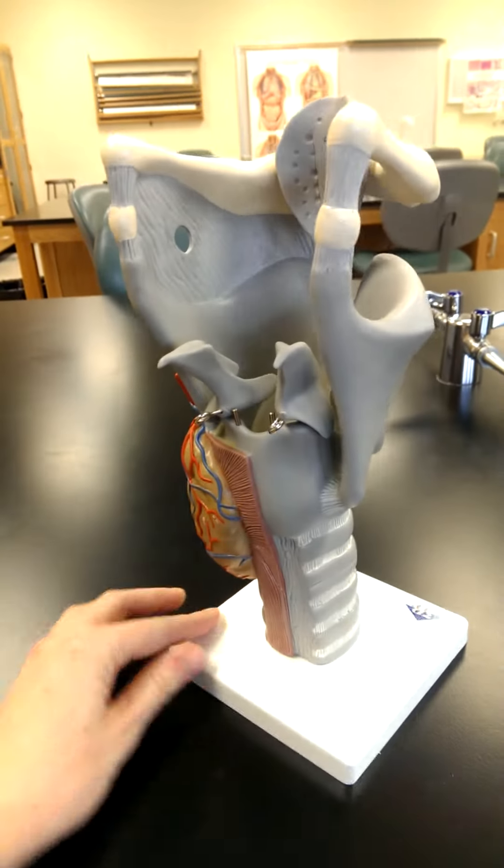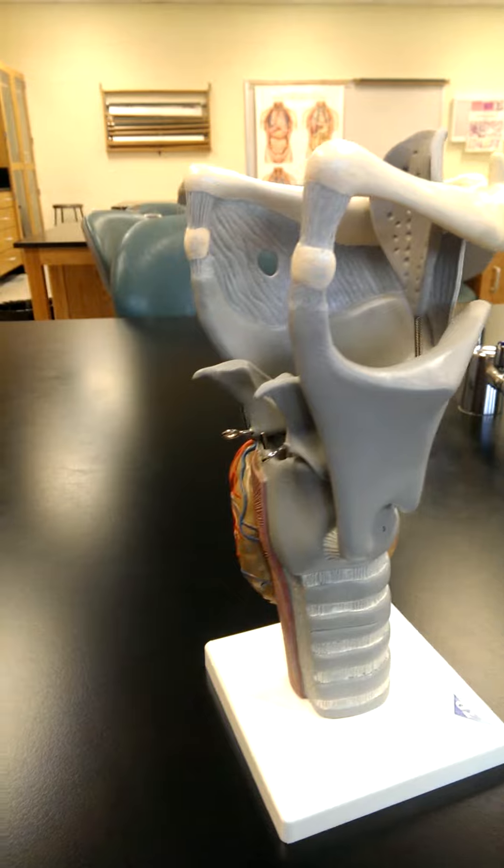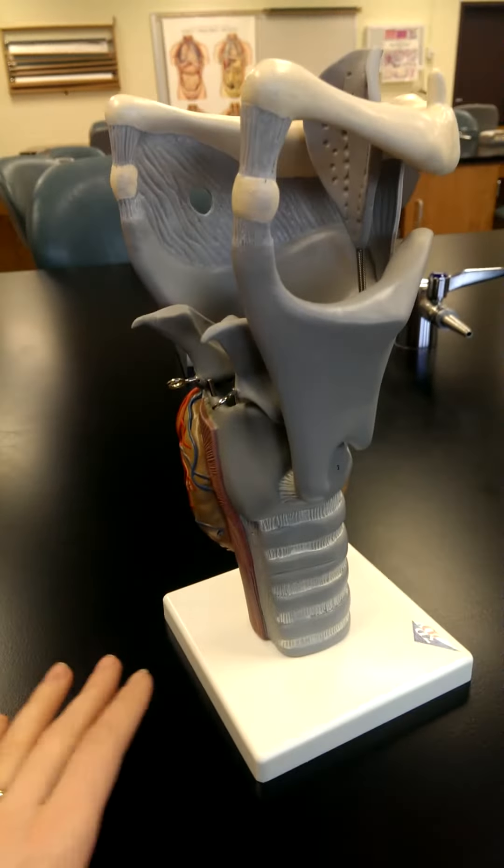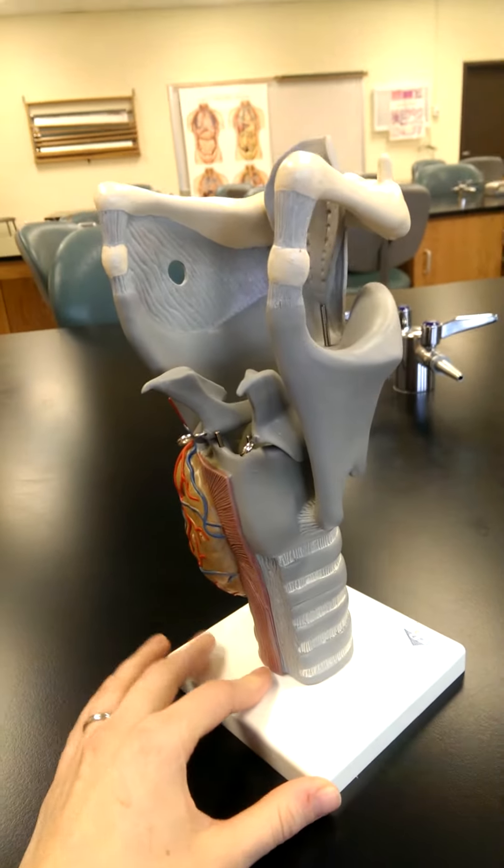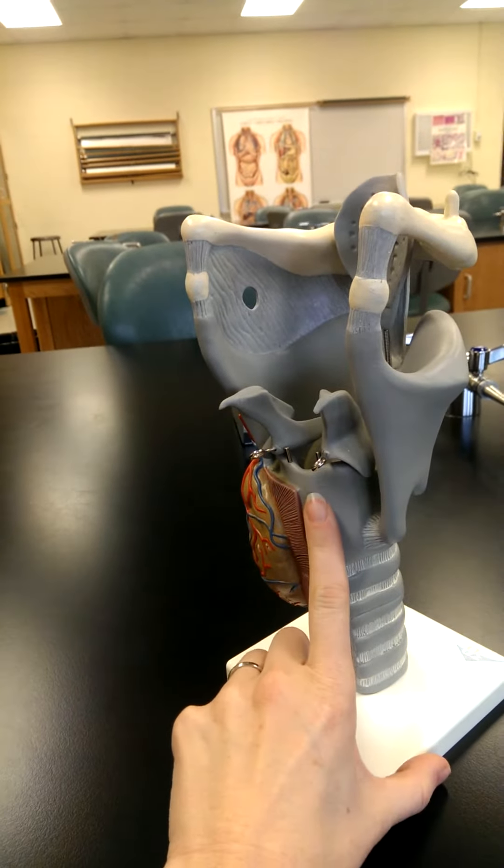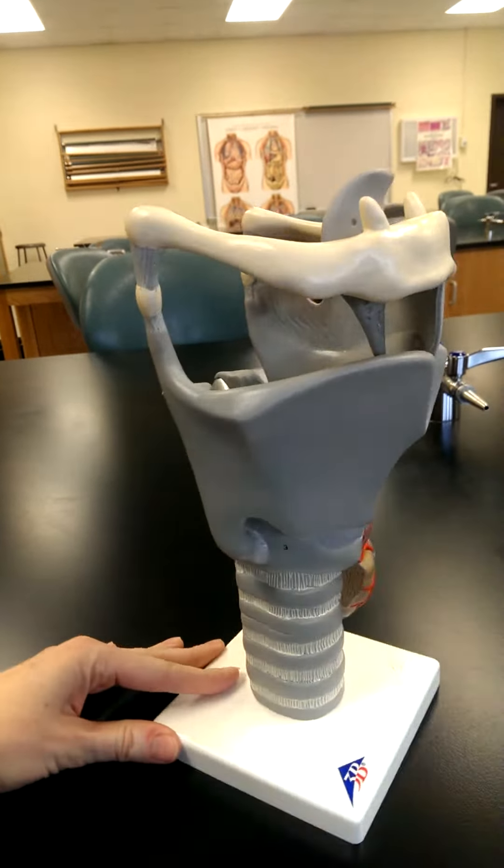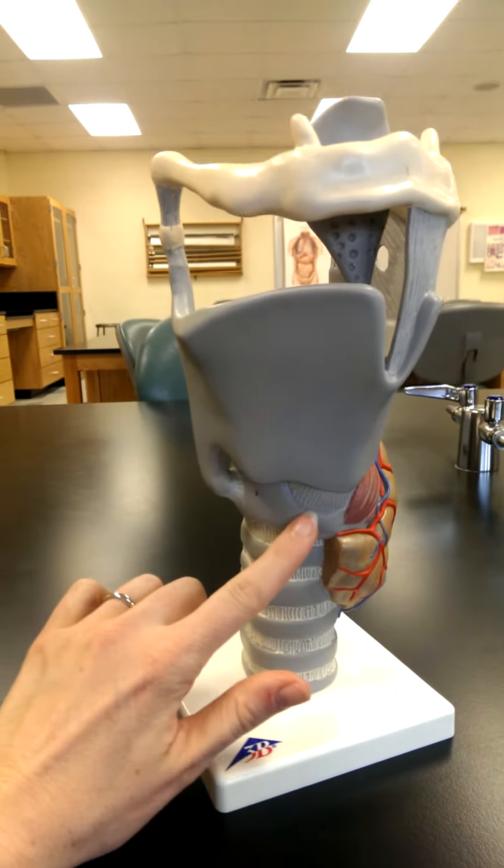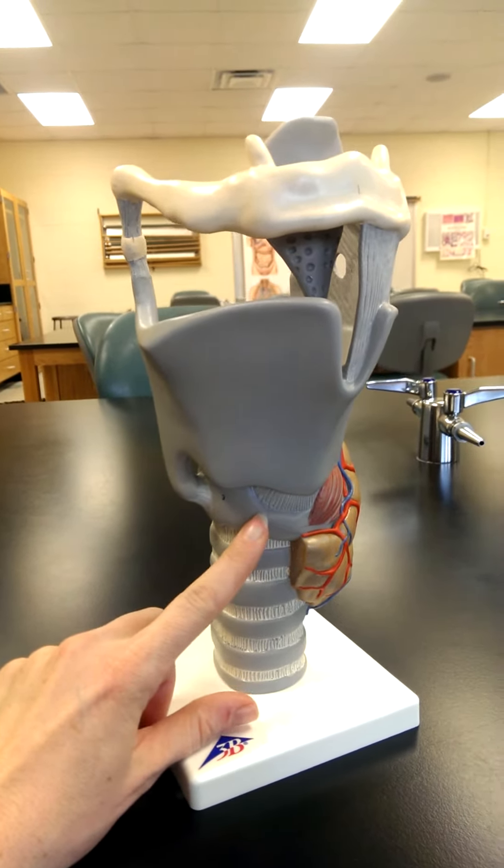Okay, next cartilage that I want to pay attention to is the cricoid cartilage. It's the only ring-shaped piece of cartilage that we see within the respiratory system, a complete ring. We see it here. The cricoid cartilage is large posteriorly, and we move around to the front we can see that it's much smaller. It looks kind of like a class ring.